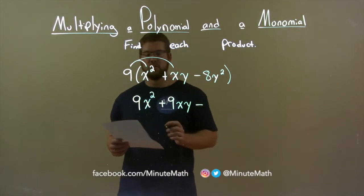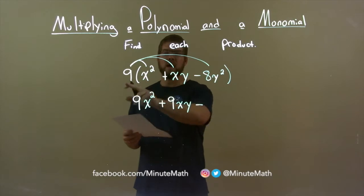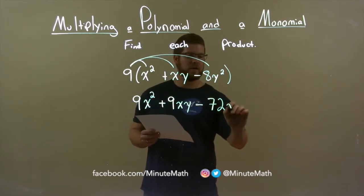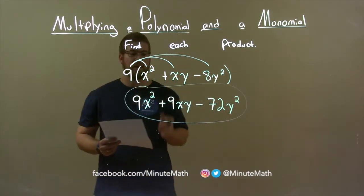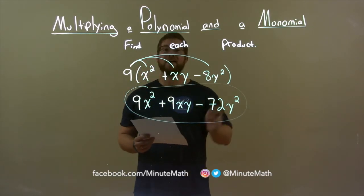Subtraction separates the last two terms, and 9 times 8y squared. Well, 9 times 8 is 72, and then the y squared just comes down. And so, my final answer here is 9x squared plus 9xy minus 72y squared.